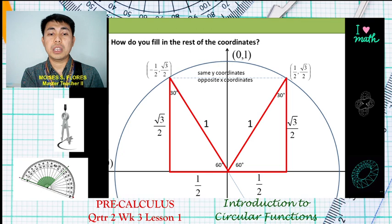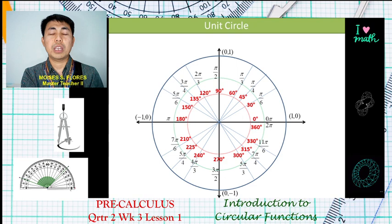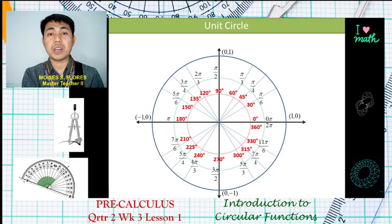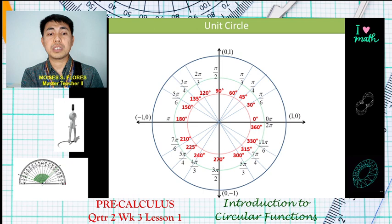So how did we come up with the coordinates? It's just a matter of using the Pythagorean theorem and the special types of triangles. Now let us complete the diagram of the unit circle, and remember, this is needed for us for the circular functions. We need to familiarize ourselves with these coordinates.